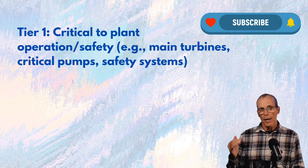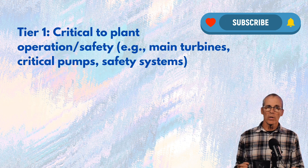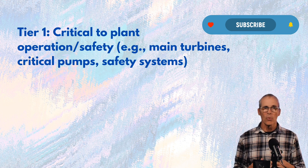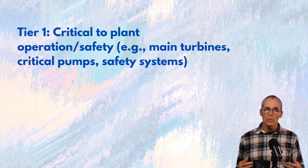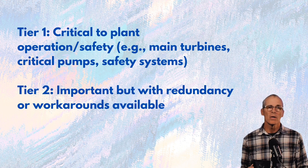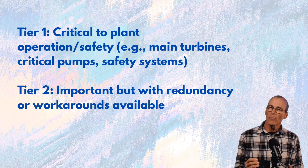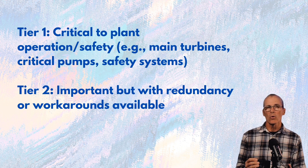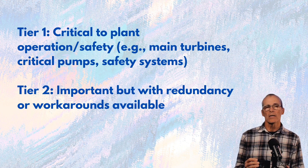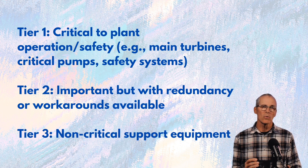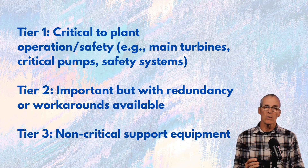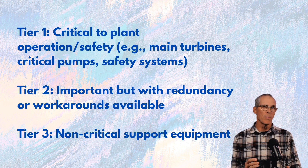Tier one is going to be what is critical to plant operation and safety — for example, the main turbines, critical pumps, and safety systems. Tier two would be important, but we've got redundancy or workarounds available. And tier three is going to be non-critical support equipment.